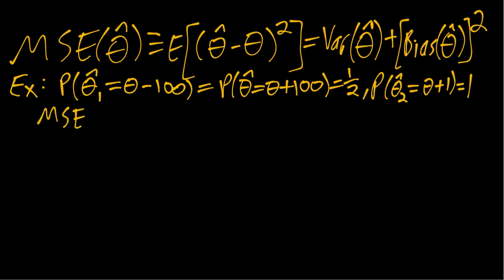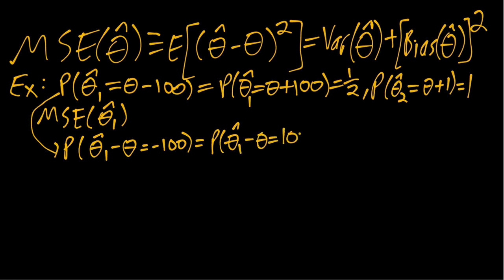So if we look at the mean squared error of theta hat one, we can see each of the two possible values of theta hat one have probability one half. So in other words, what we're told here about theta hat one equivalently means that theta hat one minus theta equals negative 100, is the same as the probability theta hat one minus theta equals positive 100, is one half.